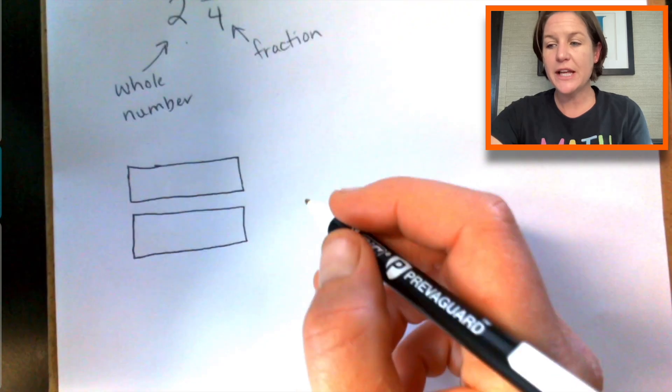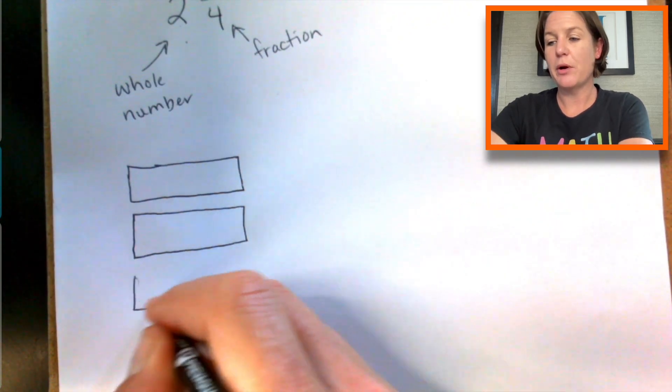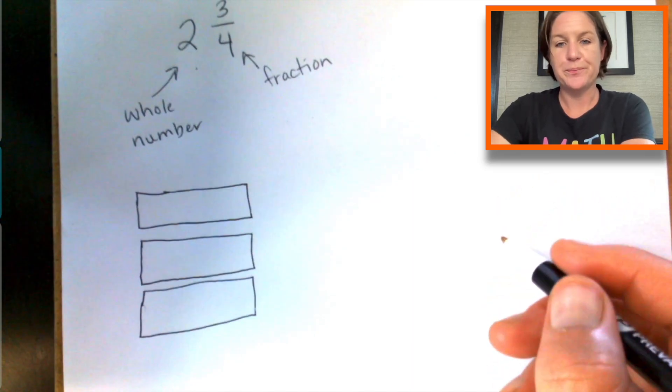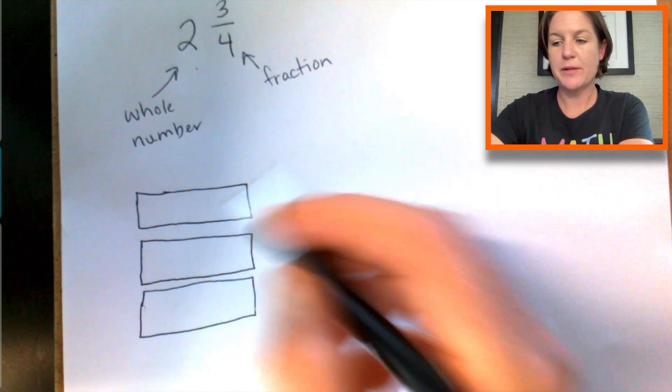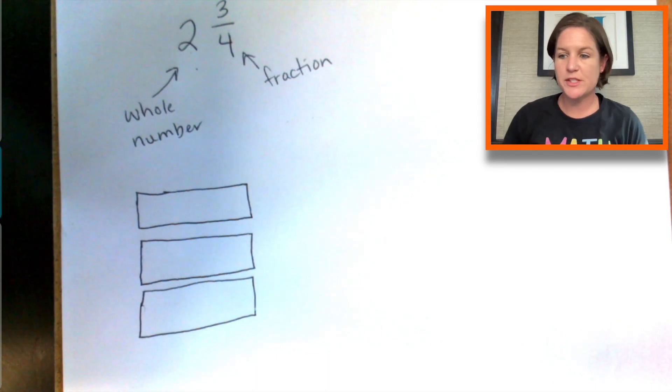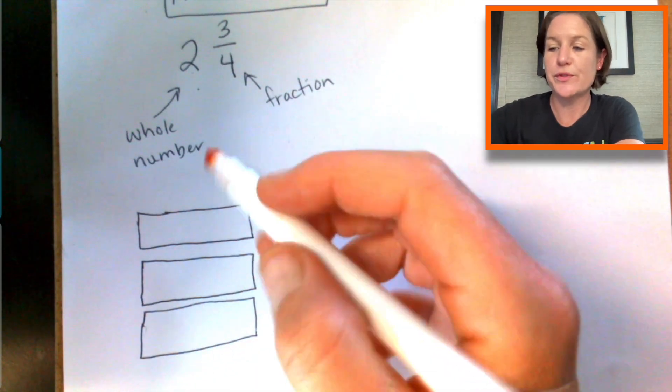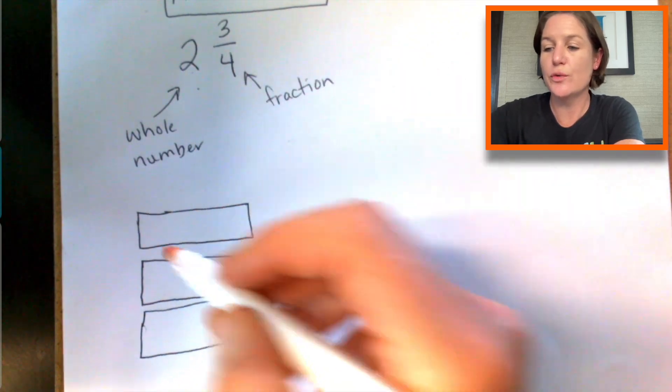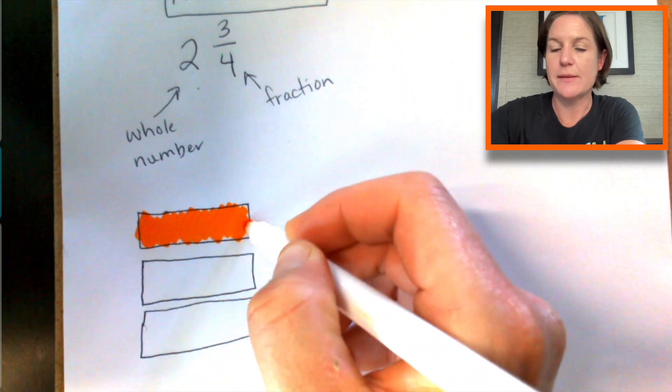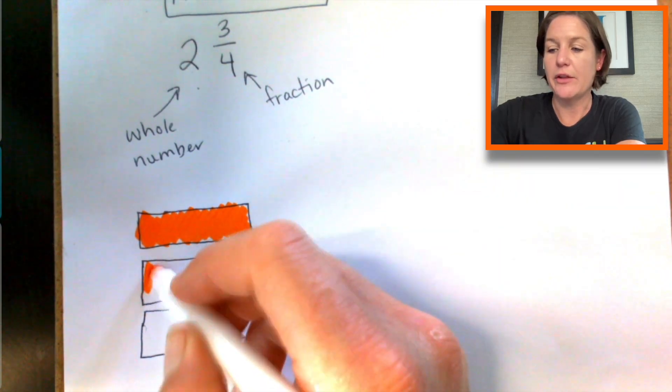So we have two wholes, plus we have a part of a whole, which is our fraction, right? All right, so there we go, two wholes. I'm going to get a color. I'm back, did you miss me? We have two wholes, right? We're going to go ahead and shade in two wholes that we're considering.